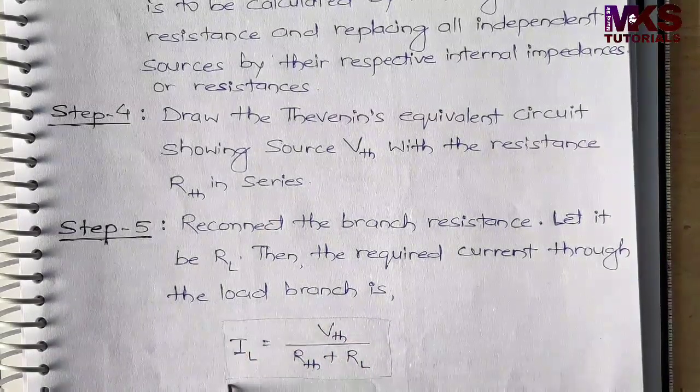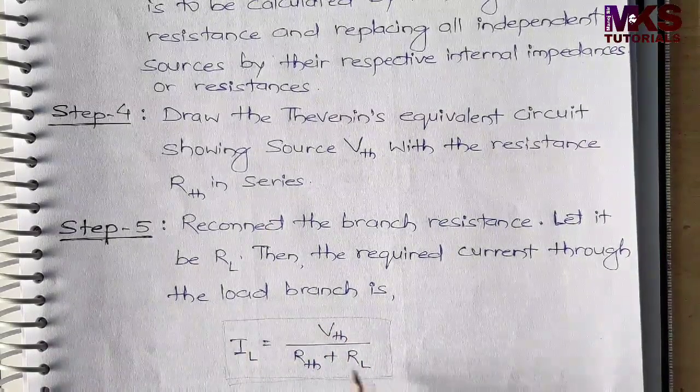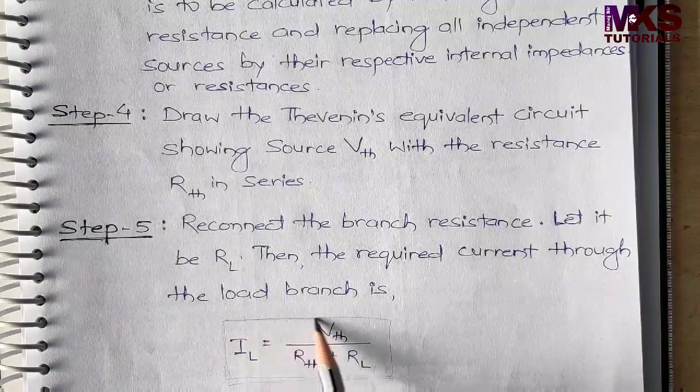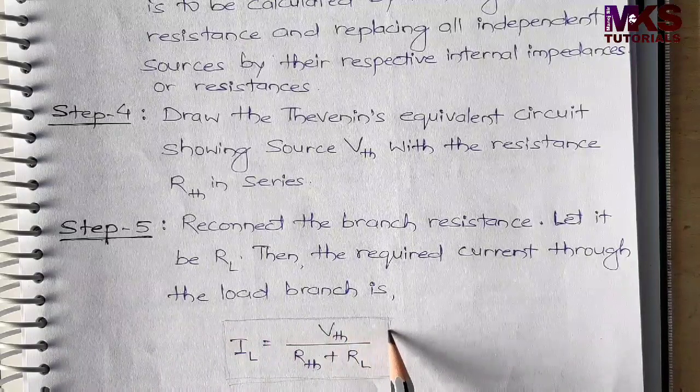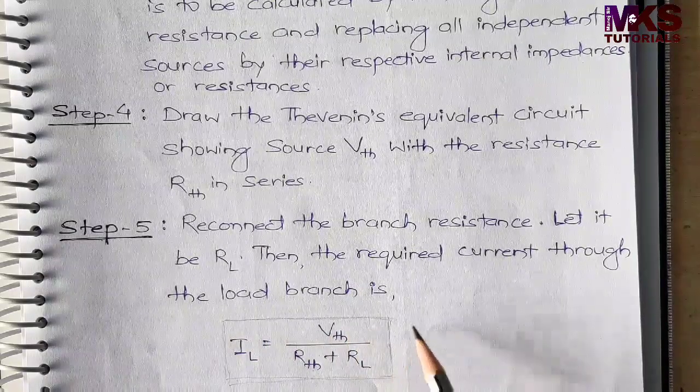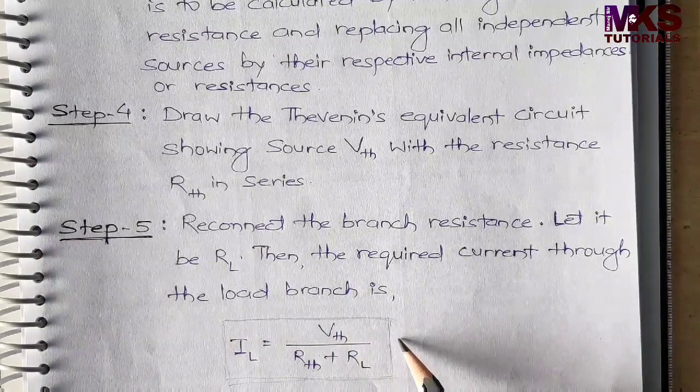यह मेरा final equivalent voltage-current का formula है: IL = VTH / (RTH + RL).